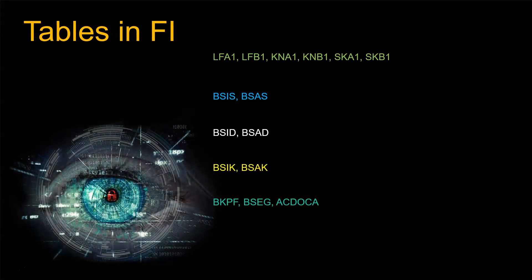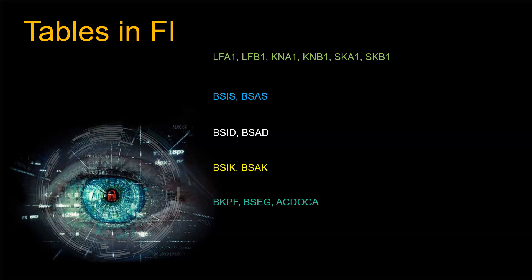Some more technical content for ABAP developers: we all know tables LFA1, LFB1, KNA1, and SK1 — but do you know the difference between table BSIS and BSID? One is for GL open items and the other is for GL cleared items. As ABAP developers or SAP FI functionals, we tend to follow information provided by senior team members without knowing the reason behind using these tables or T-codes. This training will be the perfect occasion to clarify those doubts and get our concepts cleared for good.